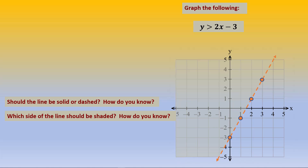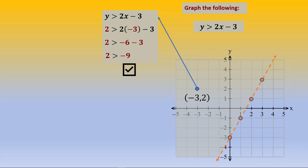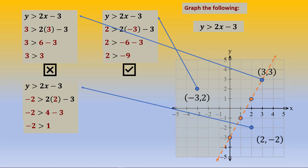Let's try the point negative 3, 2. We plug it into the inequality, work it through, and end up with 2 greater than negative 9. This is a correct statement, so this point is in the solution set for this inequality. We pick another point that's on the dashed line, 3, 3. Plug it in, work it through, and we end up with 3 greater than 3. That is not a correct statement — this is not part of the solution set. Another point outside of the shaded region, 2, negative 2, gives us negative 2 greater than 1. That is not a correct statement, so this is not in the solution set for the inequality.